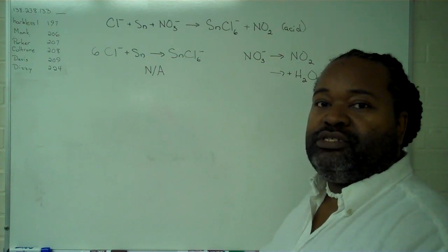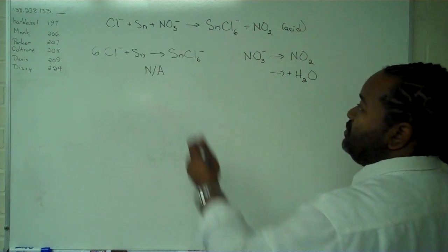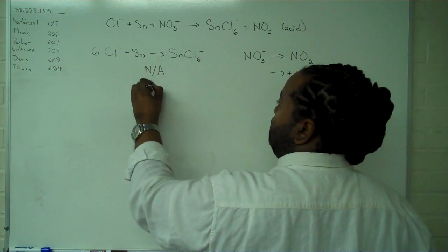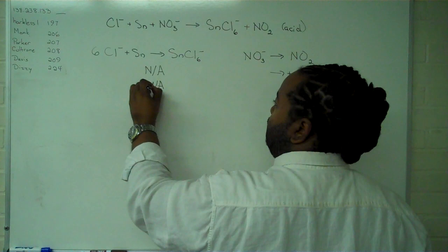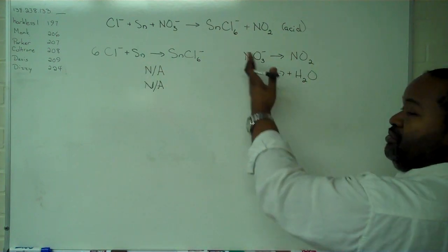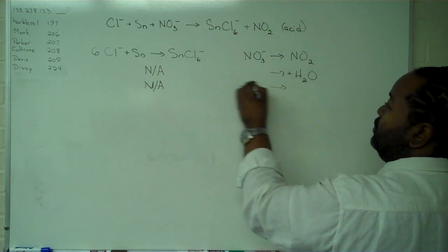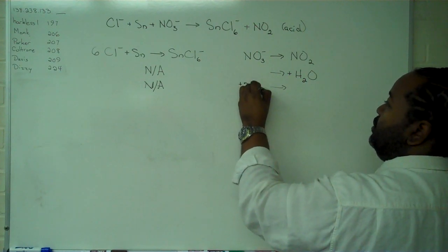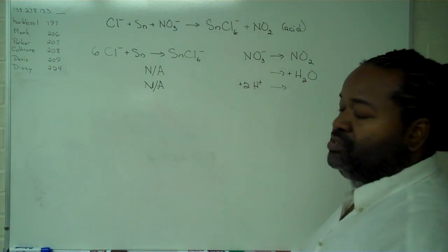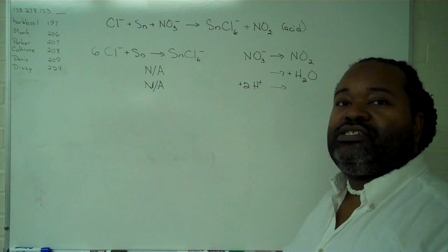Next, we're going to balance hydrogen by adding H+. We have none here, so this step does not apply on this side. Over here, we have zero hydrogens versus two hydrogens, so we'll need to add two H+. So now all of the mass is balanced,